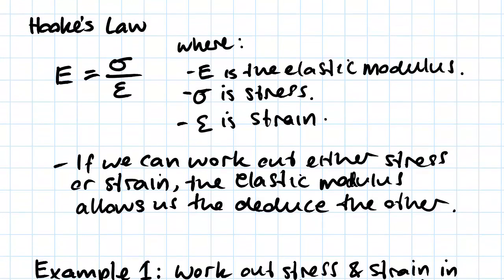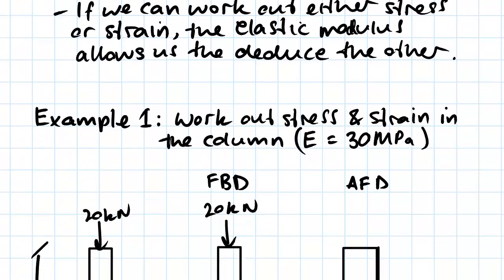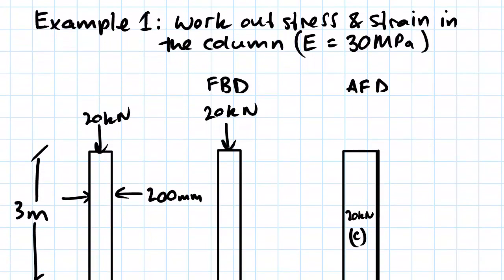If we look at an example now, we've been given this new piece of information and we're going to do an example using it. Our first example is going to be to work out the stress and strain in the column. We've been given E is equal to 30 megapascals. This is a fairly standard strength for concrete.